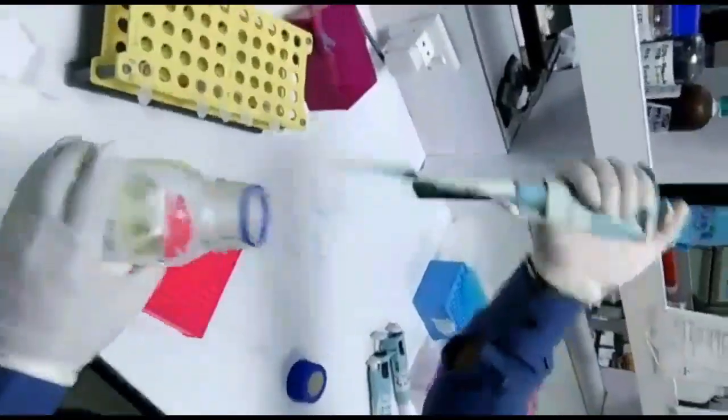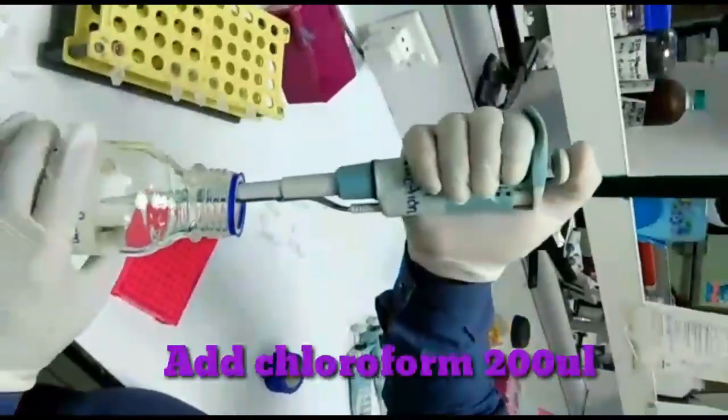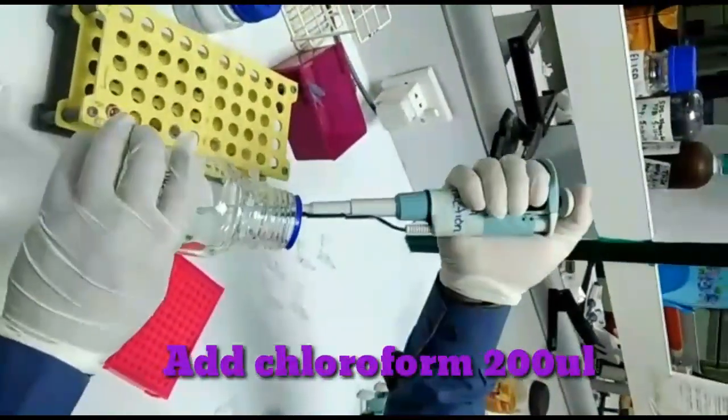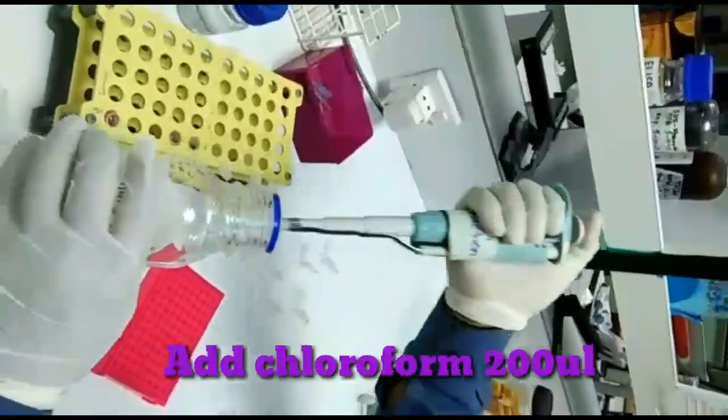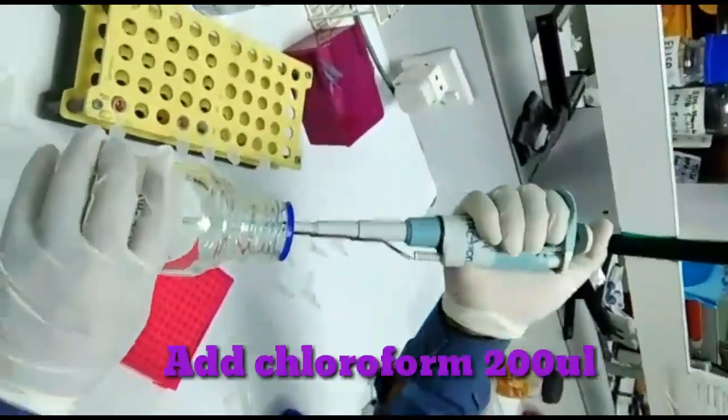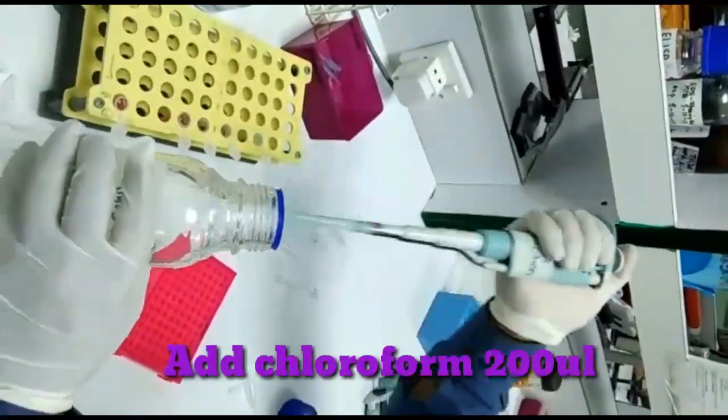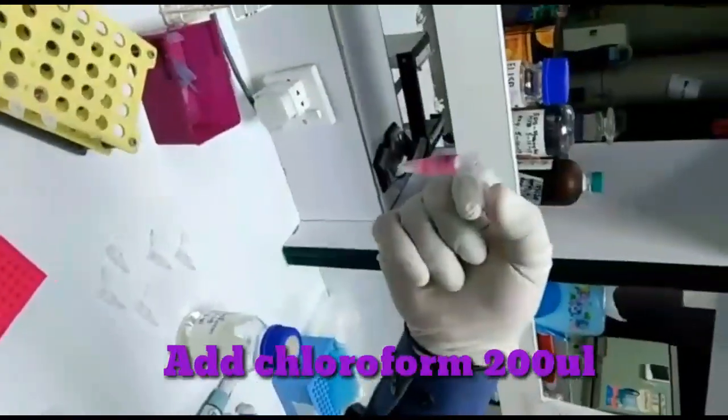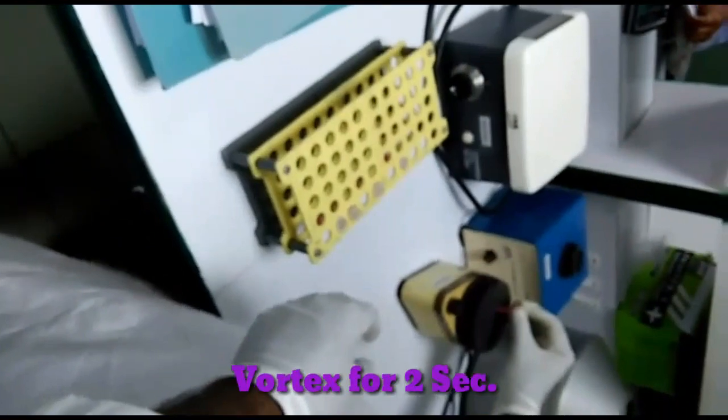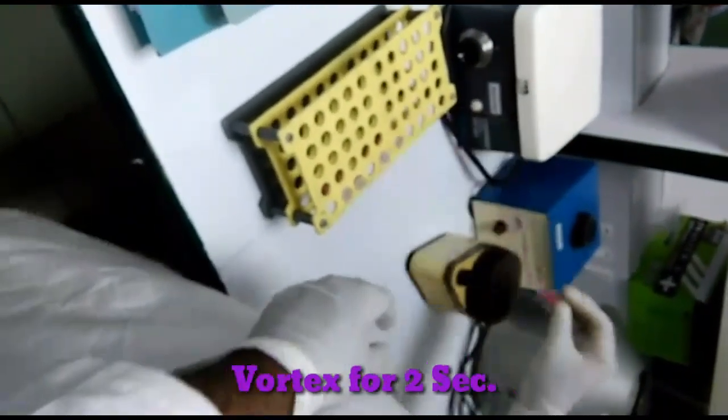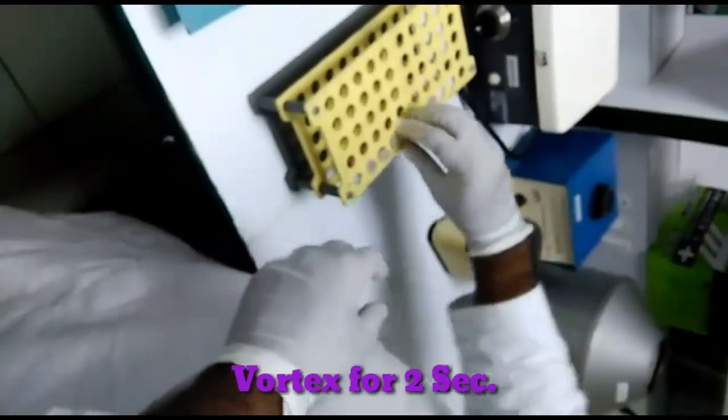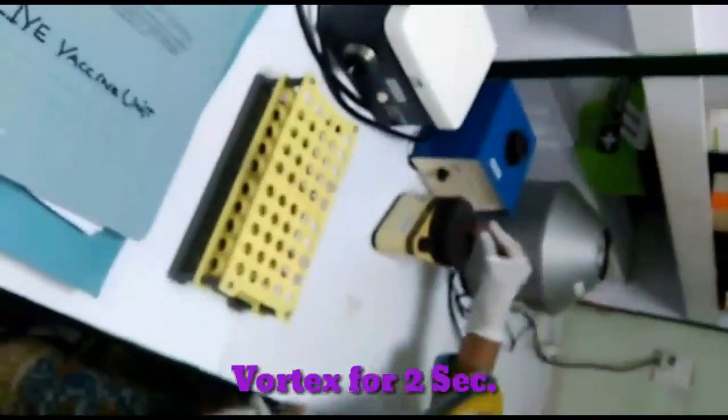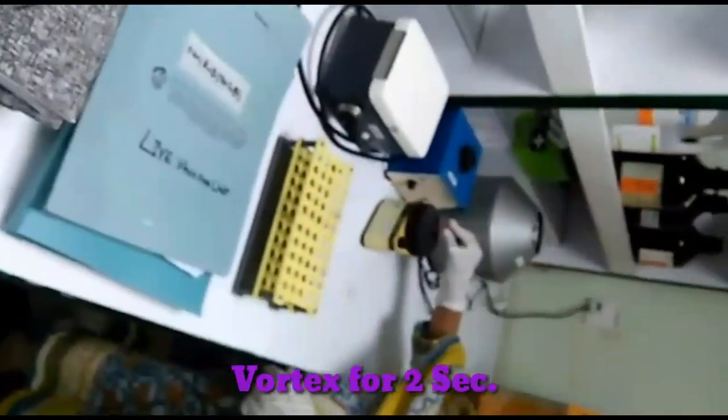After that, add chloroform 200 microliters in each sample. We are mixing each sample for two seconds. After vortex, incubate the sample for 15 minutes.